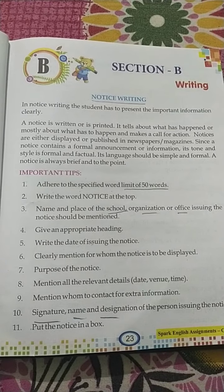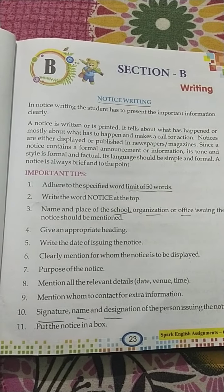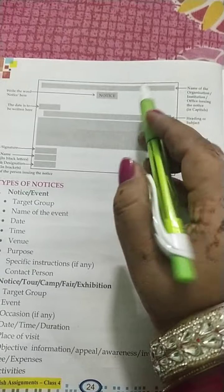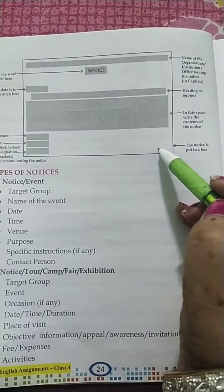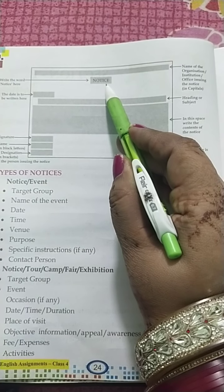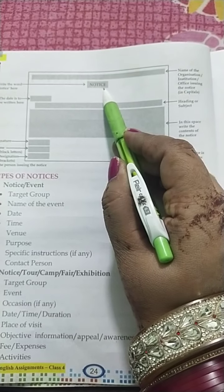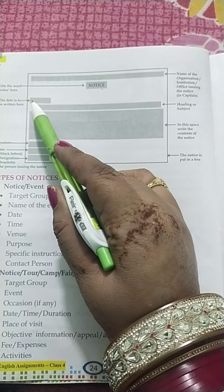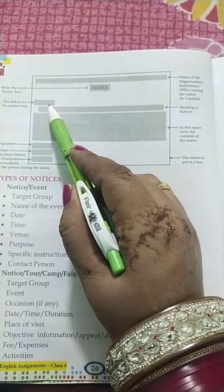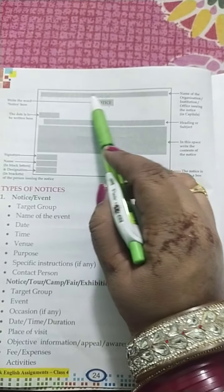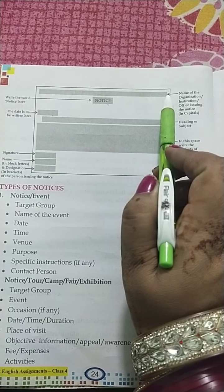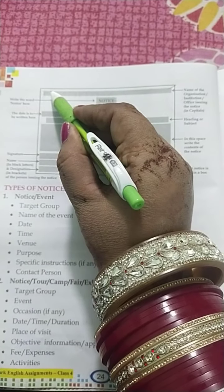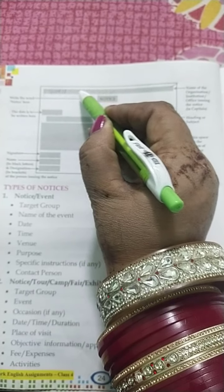And the notice should be written inside a box. So, there is a format for notice writing. First, you can see the box. At the top of the box, write the word NOTICE in capital letters. After that, the date is written, and at the top of the box, write the name of the organization, institution, or office issuing the notice — for example, Guru Ram Das International Public School.